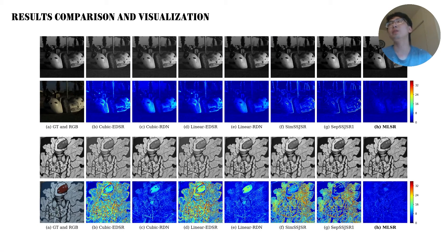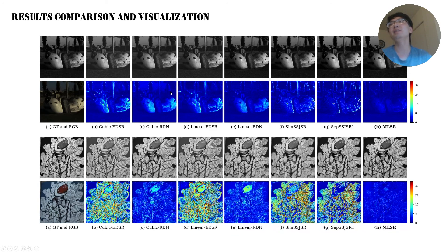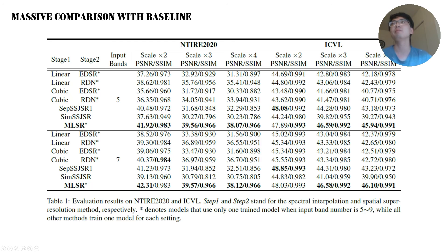Here are the results — result comparison and visualization. The top left is the ground truth, and the image under it is the corresponding RGB image. The first row shows the predicted results for the same band by all methods, while the second row shows the error map. It's clear that the error of our proposed MLSR is apparently less than other baseline methods. This page shows the massive comparison table of our methods and baselines — you can pause to see the detail. In most cases, our MLSR outperforms all baselines by a large margin, and the harder the problem setting is, the larger the difference is.